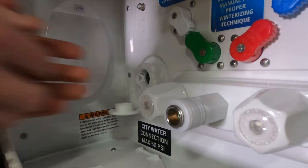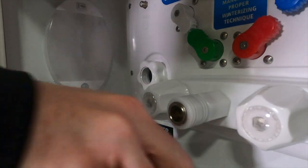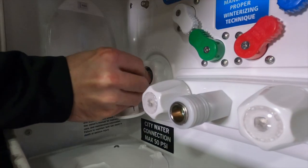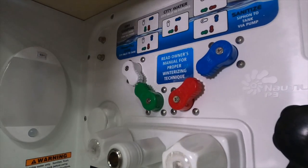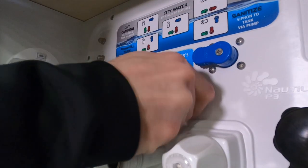Once you've blown out all of the lines, you can disconnect the air compressor. Be sure to put the screen back into the city water inlet. Then turn the knobs to the winterized position using the keys on the sticker.